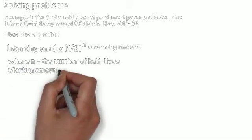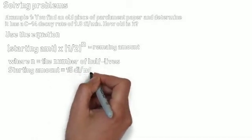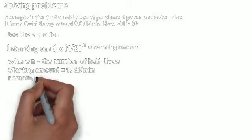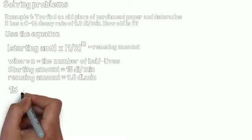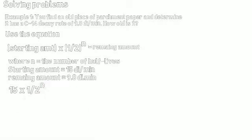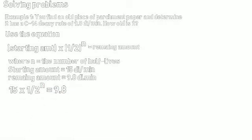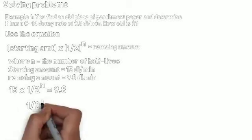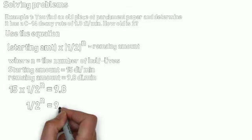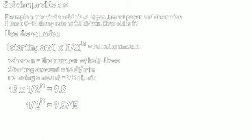obviously, the starting amount is given to us in problem as 15 decays per minute, because that's the initial decay rate, or disintegrations per minute. That's the initial decay rate of carbon-14. And the remaining amount is 9.8 disintegrations per minute. All we're going to do is plug these values into the equation, and we get 15 times 1/2 to the n equals 9.8. So now we just have to go through the process of solving it.